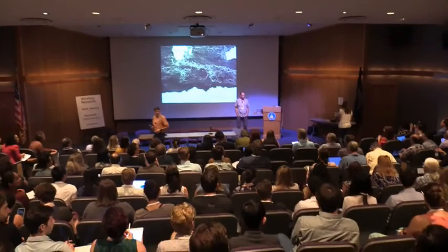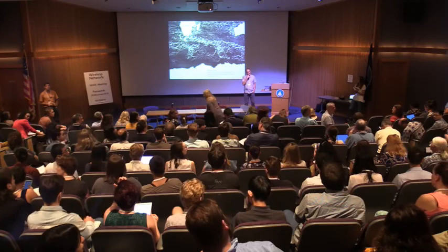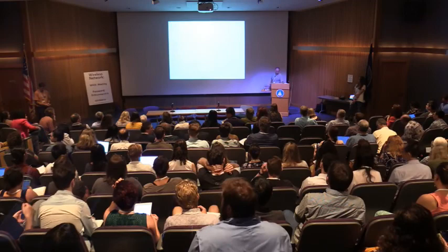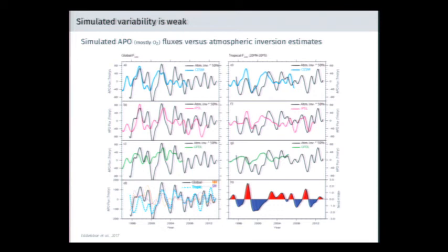Q&A: What about all the variability that's not in the model — how do you incorporate that into a time of emergence? The short answer is we don't. We know that the simulated variability in oxygen fluxes is about 50% too low. Because time of emergence is a ratio between the forced trend and the variability, it's actually unclear how the reduced variability and the reduced sensitivity of the forced trend might impact the time of emergence. But the variability is absolutely too weak.